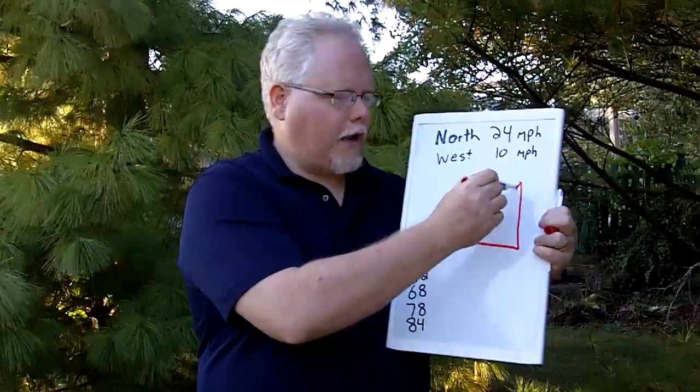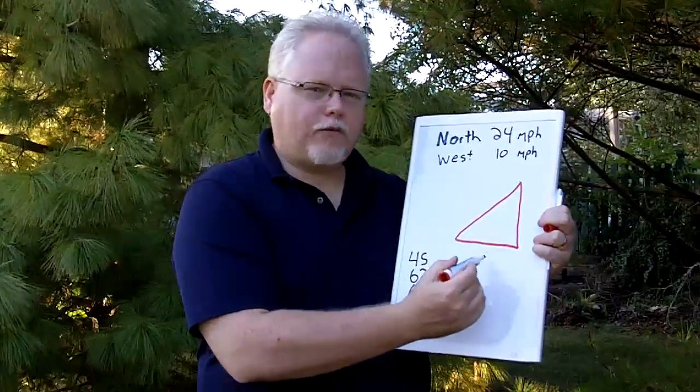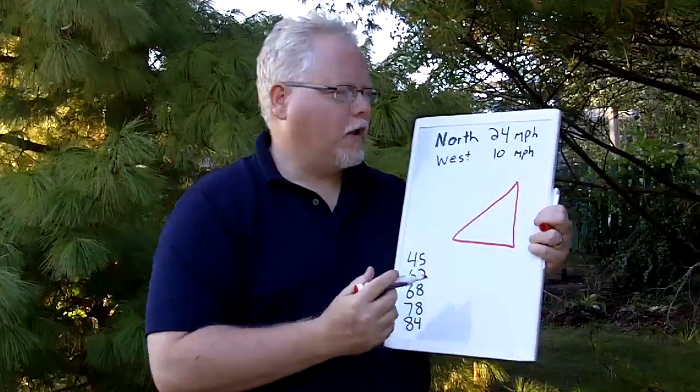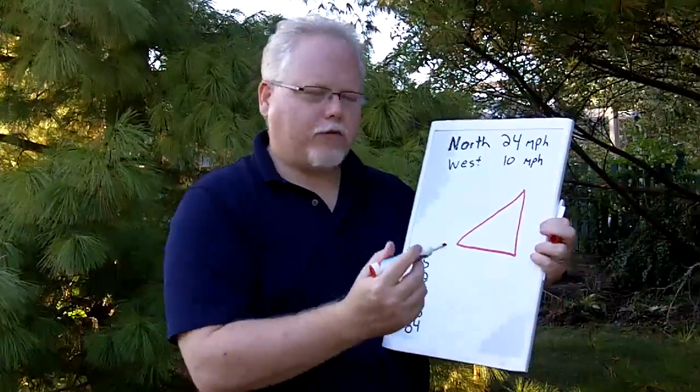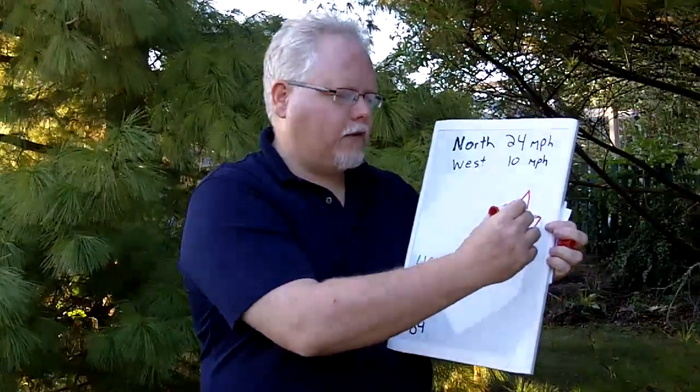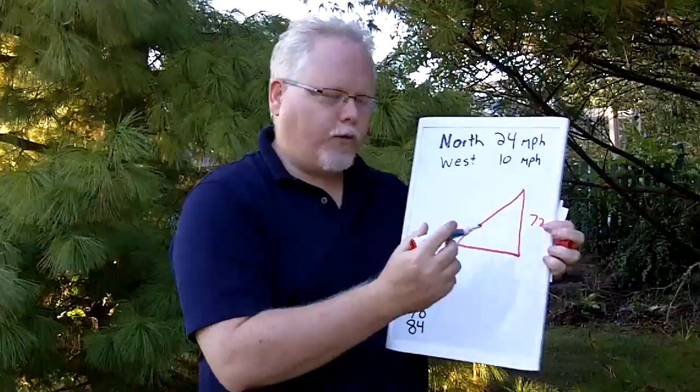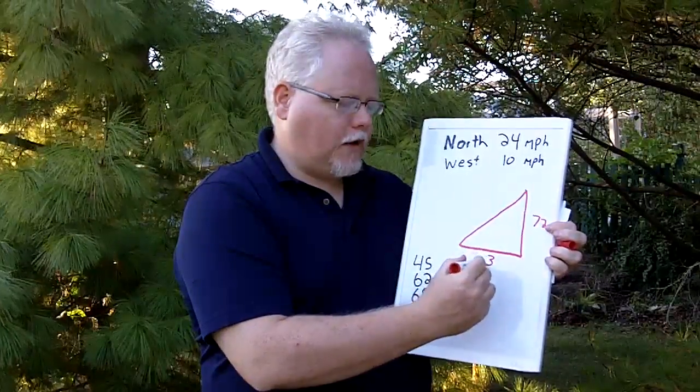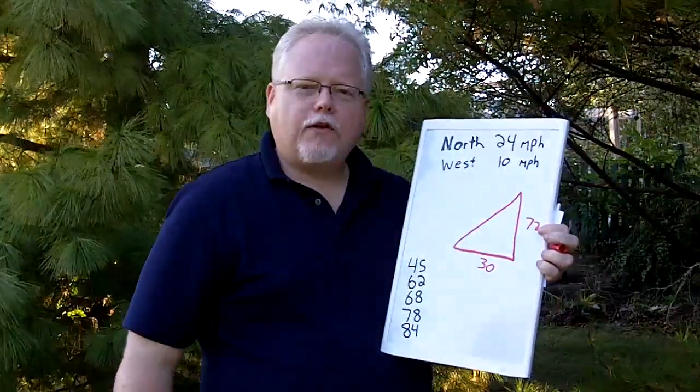And we know that A squared plus B squared equals C squared. So if we take 24 miles an hour times three hours, that's 72 miles. If we take 10 miles an hour times three, that's 30 miles.